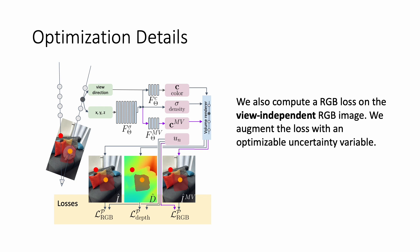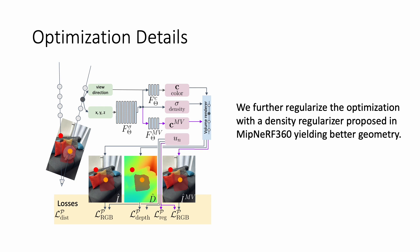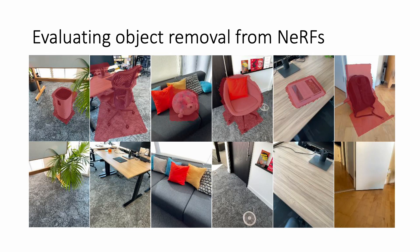We need to avoid that the uncertainty values converge to infinity. We need to add a further regularizer preventing that from happening. Additionally, we empirically found that adding the density regularizer introduced in MipNeRF 360 improves the optimized results.